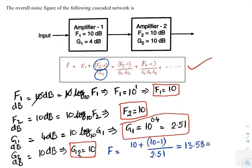If you convert them into decibels, the overall noise factor F equals 10 times log of 13.58, that equals 11.33 decibels.